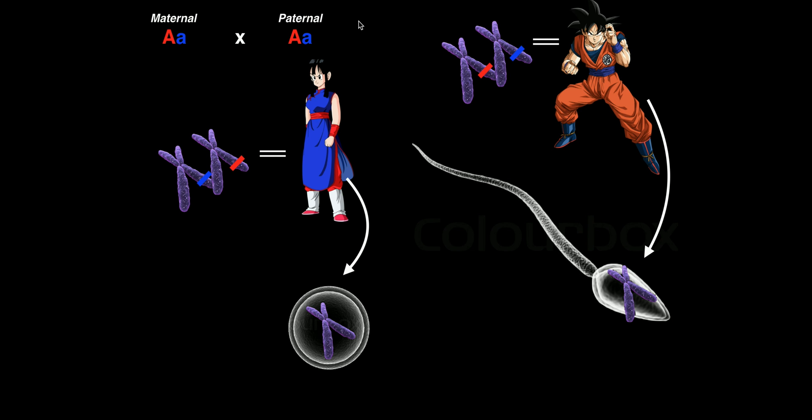Here's what the law of segregation says: the law of segregation says that during gamete formation, the alleles for each gene segregate from each other so that each gamete carries only one allele for each gene. What does that mean in layman's terms?